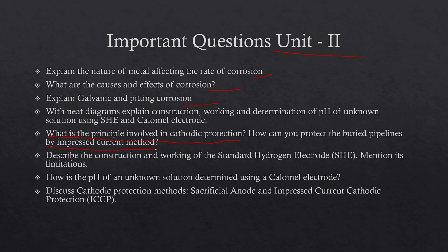What is the principle involved in cathodic protection and how do you protect buried pipelines by the impressed current method? If you want a PDF of these important questions, you can visit examuptt.com — our website. The R25 engineering chemistry PDF is uploaded there. Also prepare: discuss the cathodic protection methods — sacrificial anode and impressed current cathodic protection (ICCP). These would be five-mark questions and you will get two such questions.